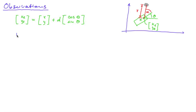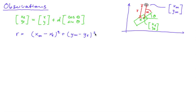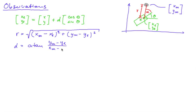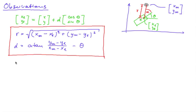This way we obtained the two measurement equations. R is the square root of (xm minus xl) squared plus (ym minus yl) squared, where xm, ym is the landmark's position (m for map). And the bearing angle alpha is the arctangent of (ym minus yl) divided by (xm minus xl) minus theta, the heading angle. So those two equations made up our measurement function h, which is dependent on x, y, and theta — a function of three variables which computes two values.